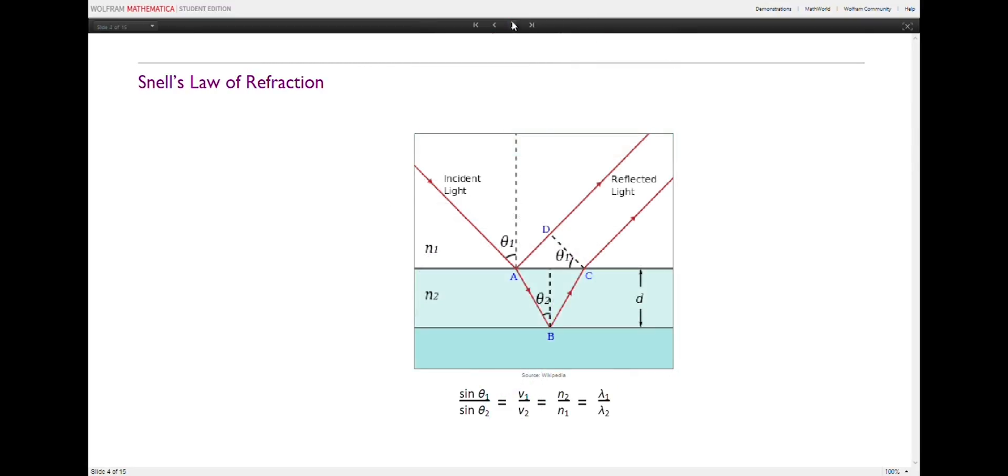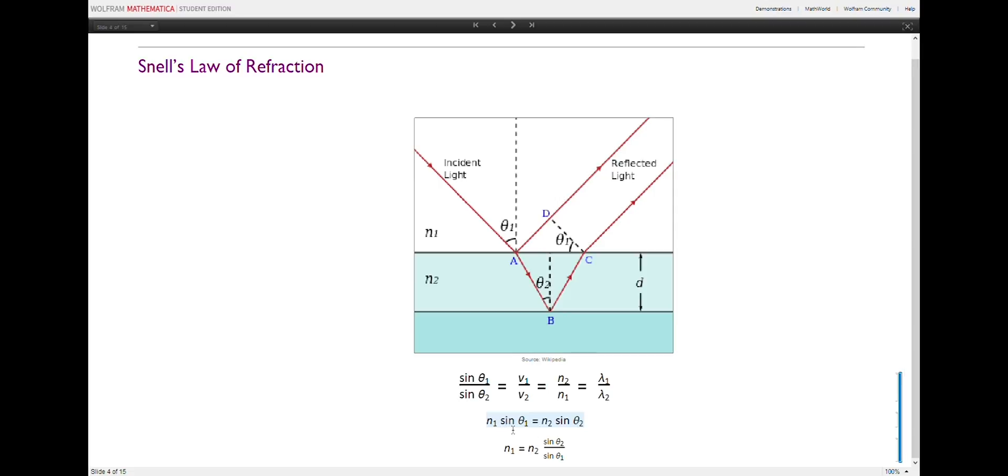For light traveling from one medium or material to another medium, for example, from air to water, Snell's law of refraction, given by this equation here, states that the angle at which light travels through the two different mediums is proportional to the velocities of light through the two mediums, v1 and v2, which is inversely proportional to the refractive indices, n2 and n1. This equation can be simplified to n1 sine theta1 equals n2 sine theta2.